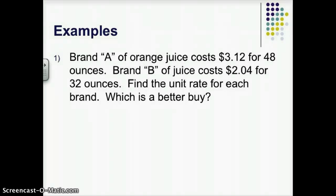Let's look at some examples. So the first one, this is a really typical type of problem that I do all the time when I'm going in the grocery store. I'm trying to find a better buy. This one says, Brand A of orange juice costs $3.12 for 48 ounces. Brand B of juice costs $2.04 for 32 ounces. Your task is to find the unit rate for each brand and then say what's a better buy. You might be able to do this on your own.